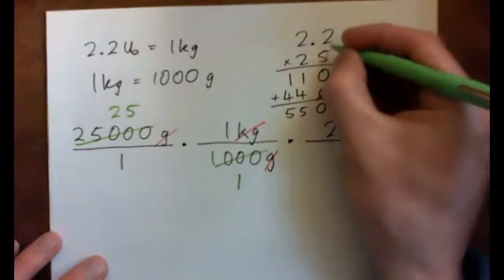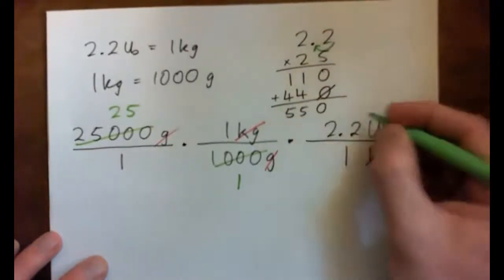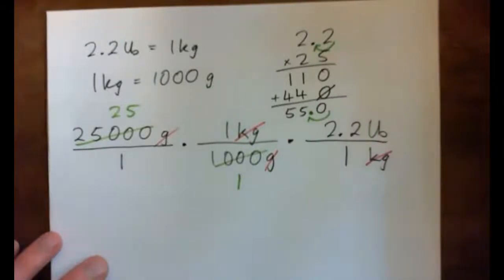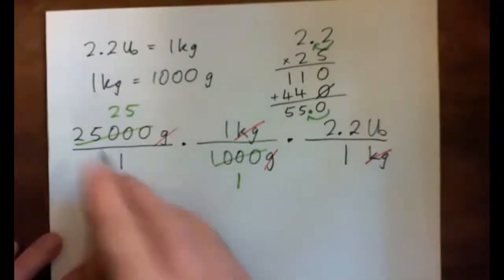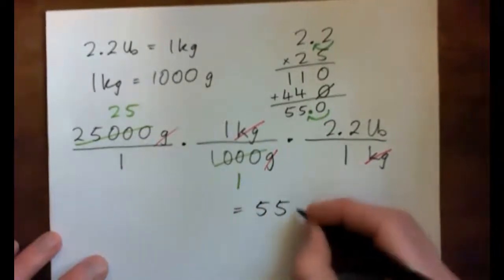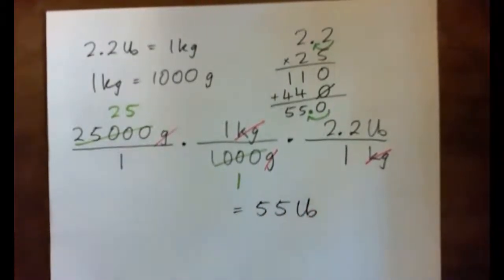But I had 1 decimal point in the multiplication, so I need 1 in the answer. 55.0 or 55. So when I go 25 times 2.2, I get 55. And that's 55 pounds. So that's the unit analysis way of doing it. Is that all working out, or does that make sense? Yeah.